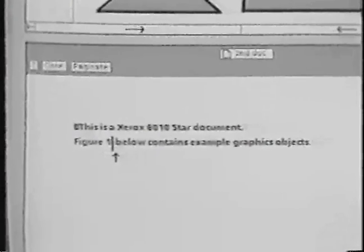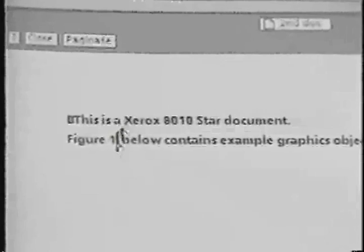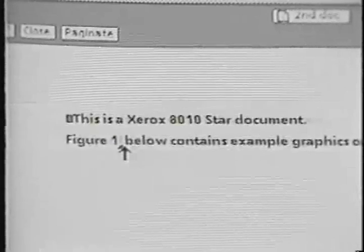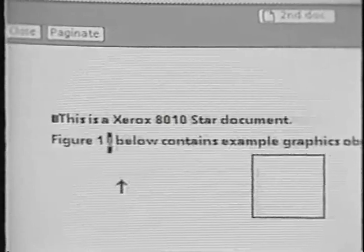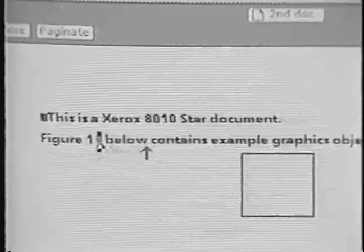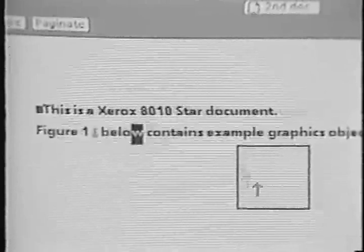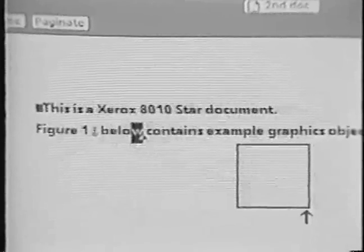This document contains nothing but text at the present. After the word figure one, I wish to now insert a reference to a figure object. I use the keyboard key in the right functional group and insert a graphics reference. This appears as an anchor character. It looks something like a little boat anchor.